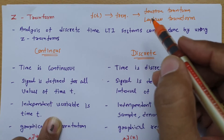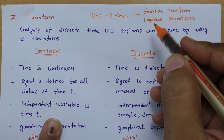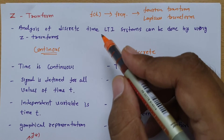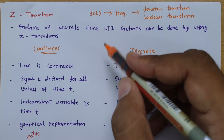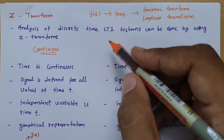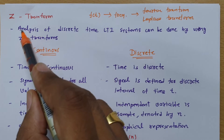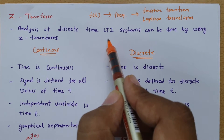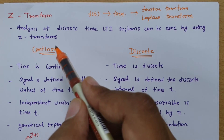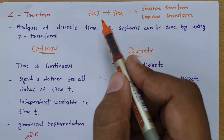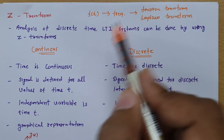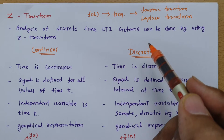So to analyze a continuous time signal, we have Fourier transform and Laplace transform. But whenever you have been given with a discrete signal, at that time a linear time invariant system could be studied in the frequency domain by using Z-transform. So basically, the analysis of discrete time linear time invariant systems can be done by using Z-transform, while continuous time linear time invariant systems are analyzed in the frequency domain using Fourier or Laplace transform.